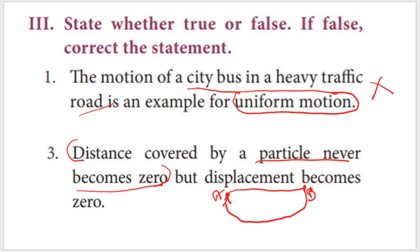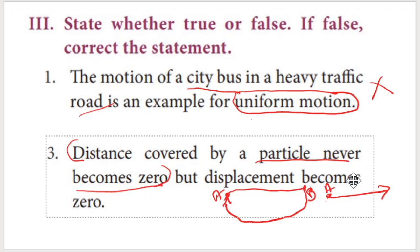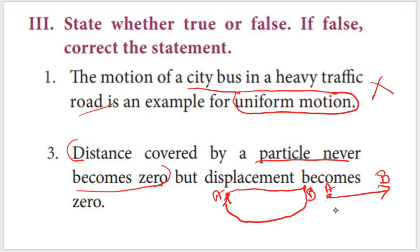But the displacement becomes zero when start and end points are the same. As an additional point: if you are traveling in a straight line, distance and displacement become equal — they have the same value in that case.